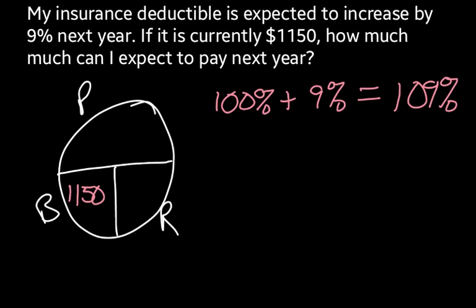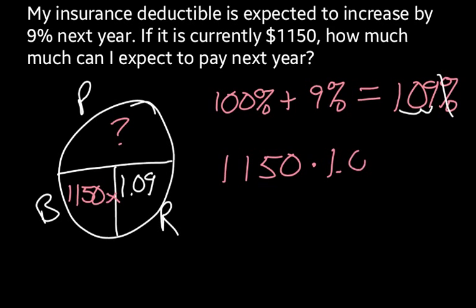I'm going to turn that 109% into a decimal — move my decimal point over two places, drop the percent sign — and I end up with 1.09. I'm going to multiply, because base and rate are separated by the multiplying line, to get my missing portion. So $1,150 times 1.09 comes to $1,253.50.